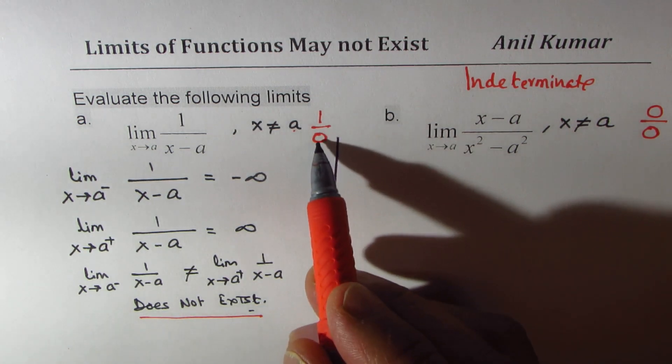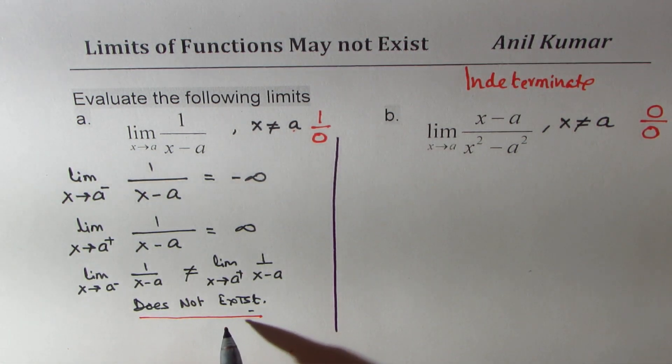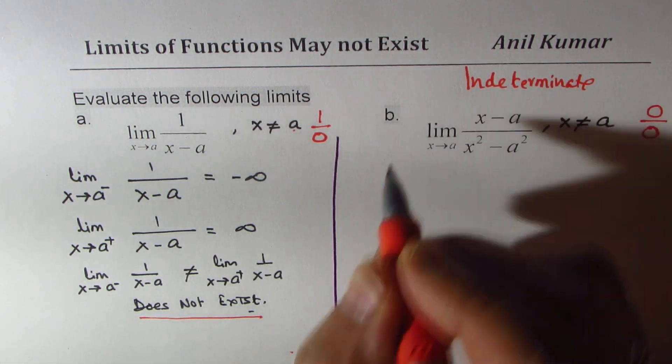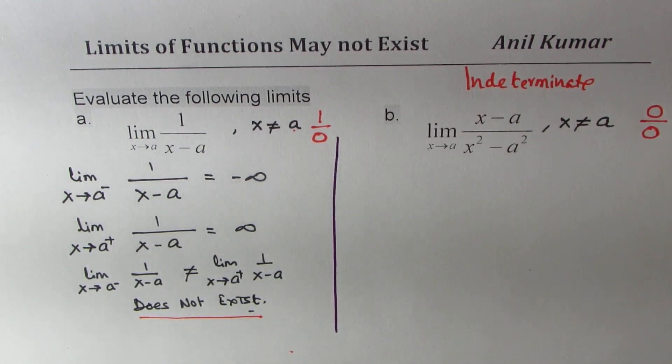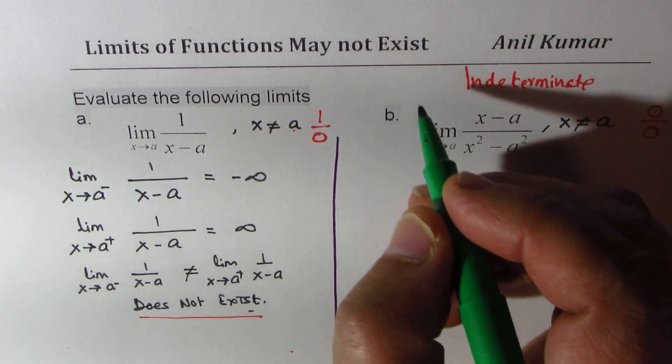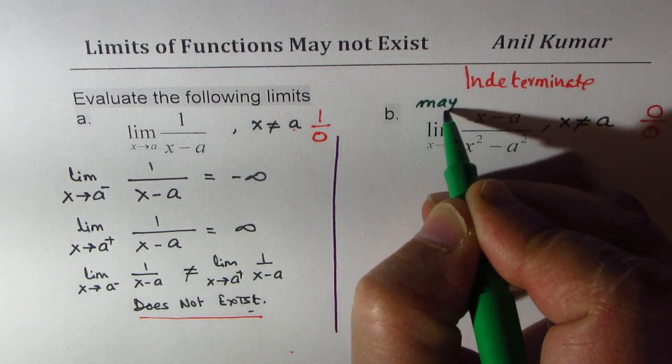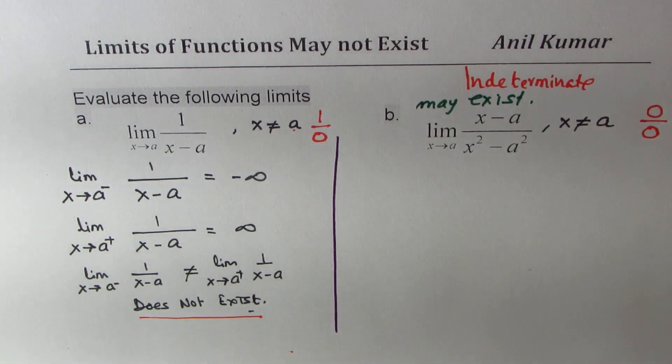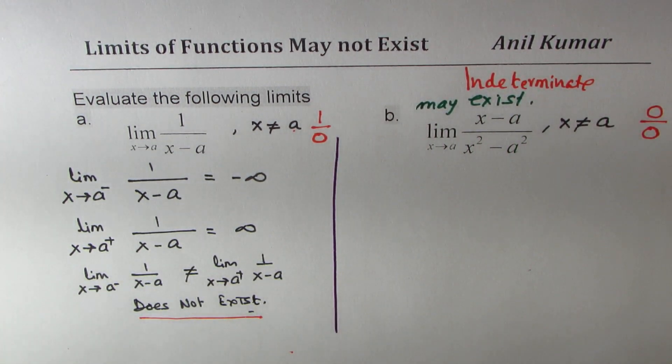So if you get this kind of a situation, then the limit will not exist. However, if you get this kind of a situation, it may exist. So in this case, we do have a condition, and it may exist. Now let's see if it really exists or not.